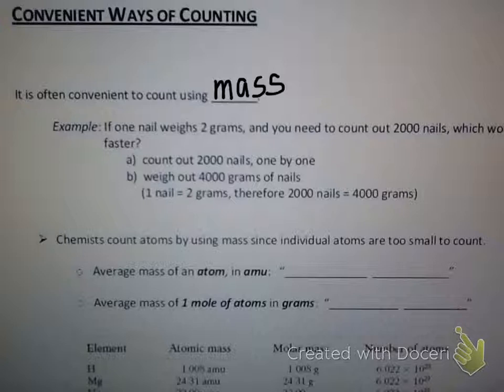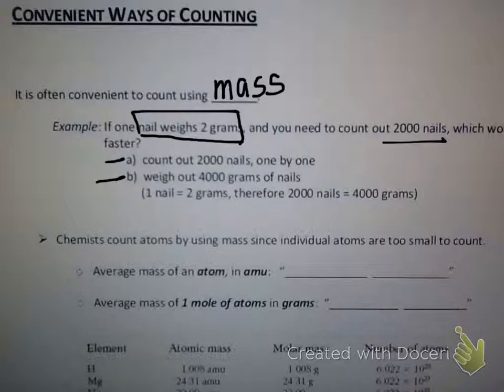Let's do an example. Let's say you go to a hardware store and you need a lot of nails — you're going to build a house. If you know that one nail weighs two grams and you need two thousand nails approximately, which way would be faster? To count out two thousand nails one by one — and by the way, don't mess up — or would the other way be easier? You know one nail weighs two grams and you need two thousand, so two thousand times two is four thousand. You go over to a scale, dump out a box, and weigh four thousand grams of nails, giving you about two thousand nails. Obviously that way is going to be faster.